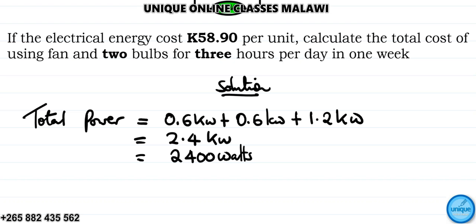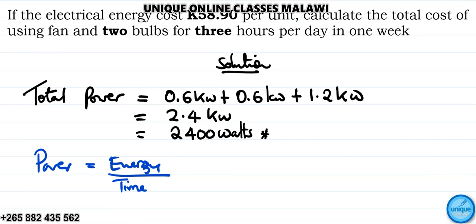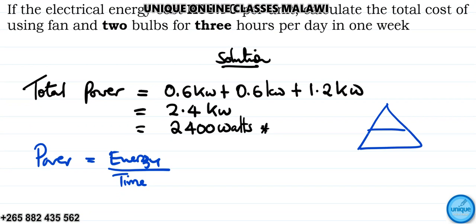Then we can calculate the total energy. Remember, the formula to find power is given by energy divided by time. So power equals energy divided by time. Therefore, energy is the product of power times time taken.